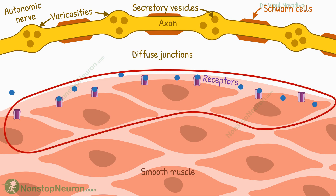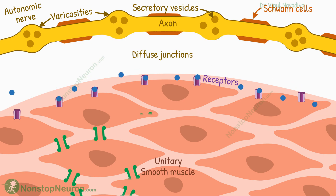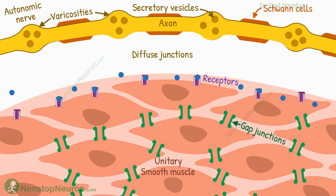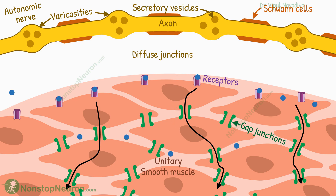Often, the nerve stimulates only the outer layer of fibers. This is especially true for unitary smooth muscles. In such muscles, fibers are connected by gap junctions. Through these junctions, the depolarization can rapidly spread from outer fibers to deeper fibers. Apart from that, diffusion of the transmitter through the interstitial space can also contribute to stimulation of deeper fibers.